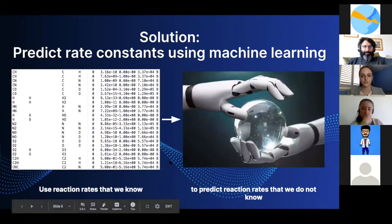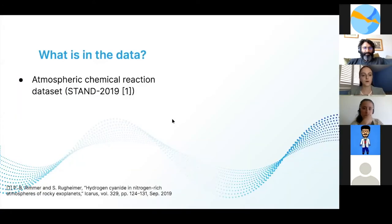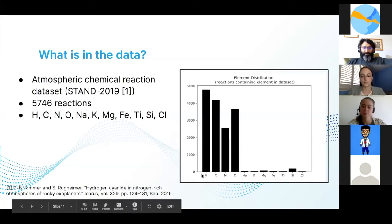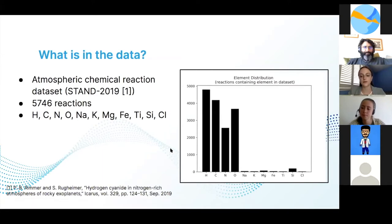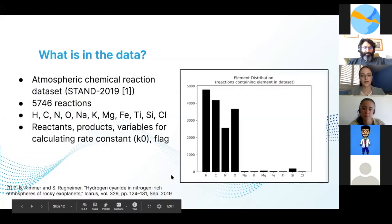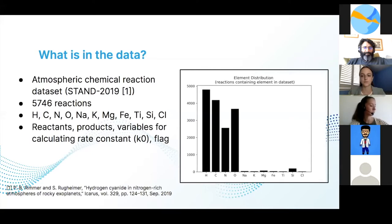For this project we use an atmospheric chemical reaction dataset called STAND 2019. Because the model heavily depends on the data we give it, we wanted to figure out what's in the dataset. There are 6,000 reactions, 11 different types of elements. On the right you can see a chart with elements on the x-axis and their frequency on the y-axis. The dataset is heavily geared towards hydrogen, carbon, nitrogen, and oxygen. It also has reactants, products, variables for calculating the rate constant, and reaction flags.